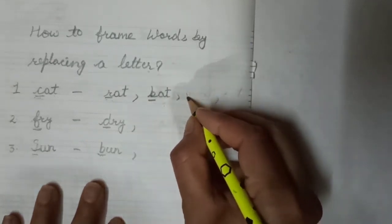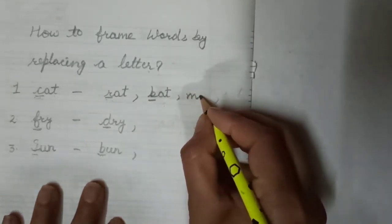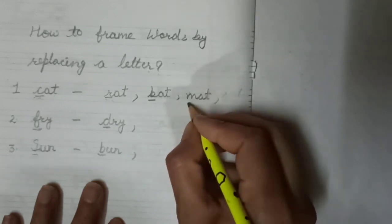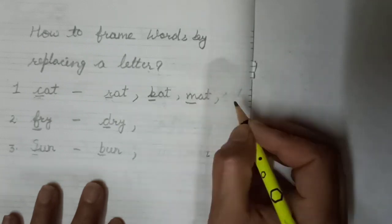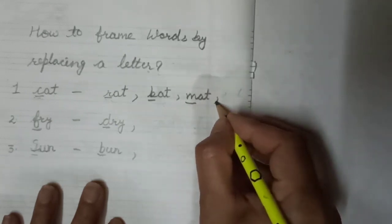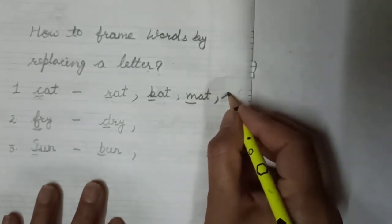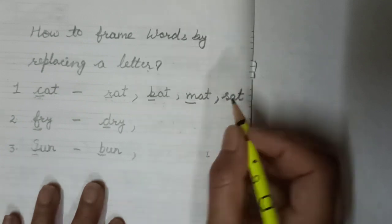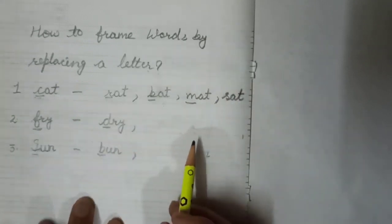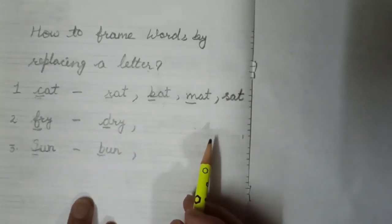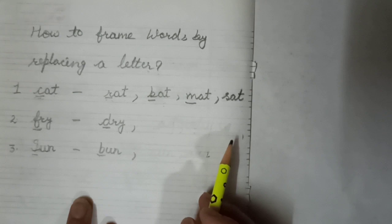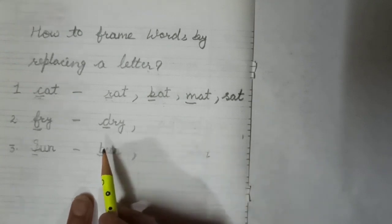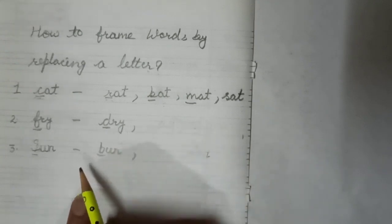Cat, bat, mat — M, A, T. Here I replace C with M to get mat. You can also replace with S to get sat — S, A, T. Like this you can frame new words from a given word.